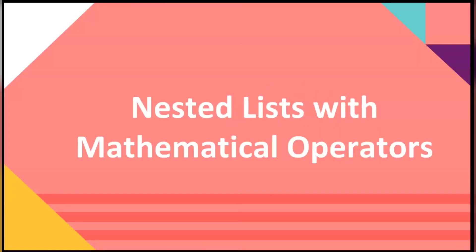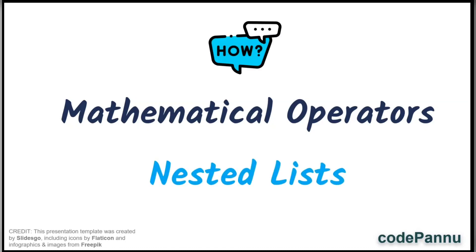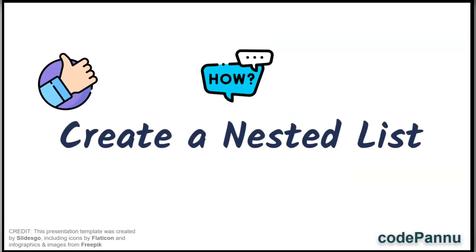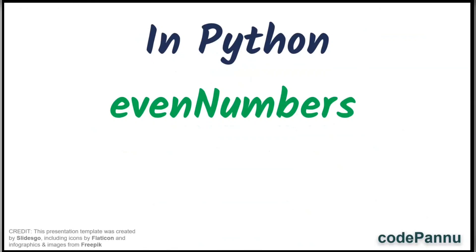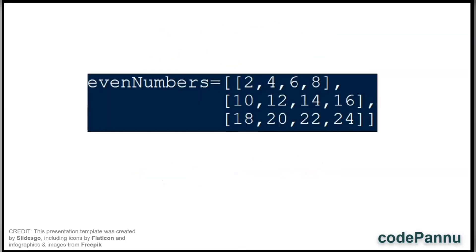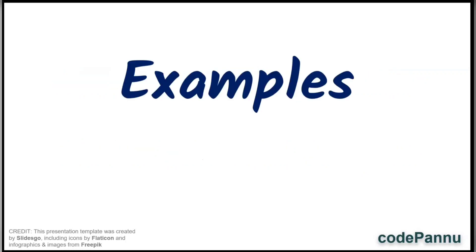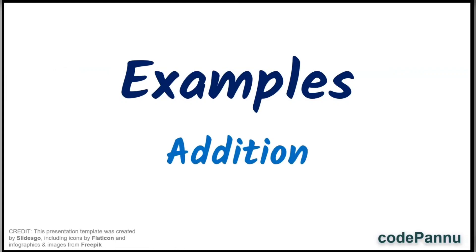In this video we are going to see how to use mathematical operators with nested lists. We know very well how to create a nested list, so let us go to Python first and create a nested list called 'even numbers' with three rows and four columns. We can do any mathematical operation on a nested list with integers.